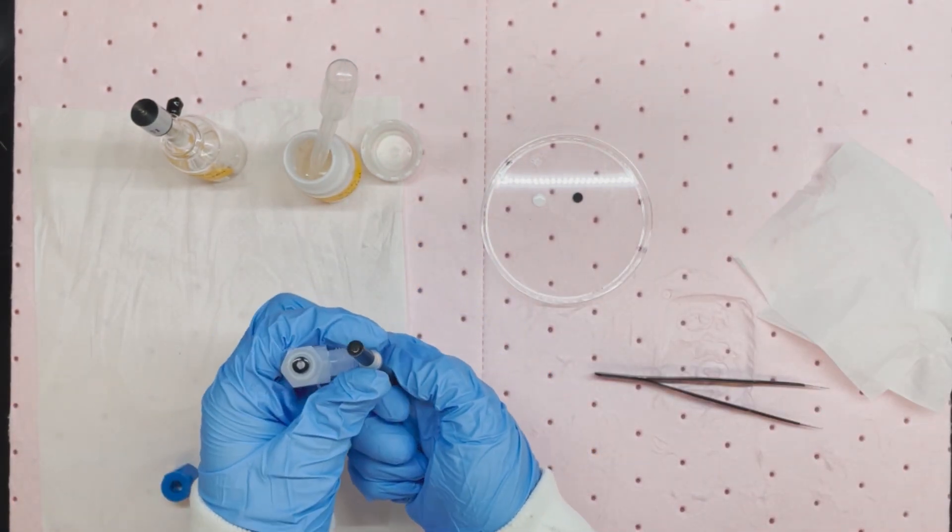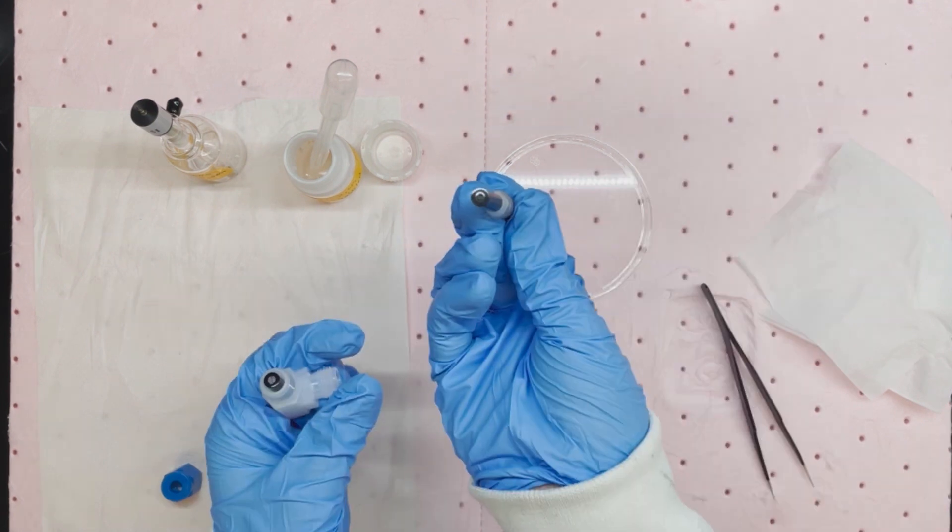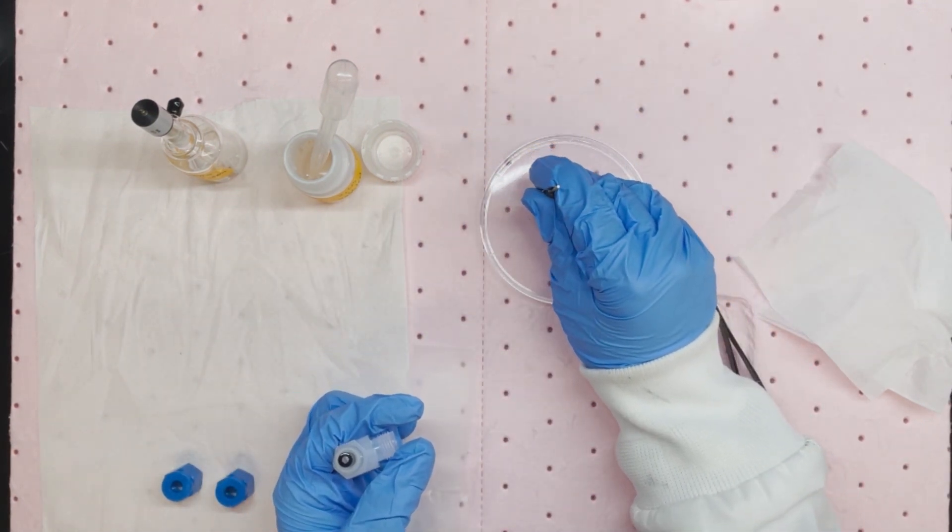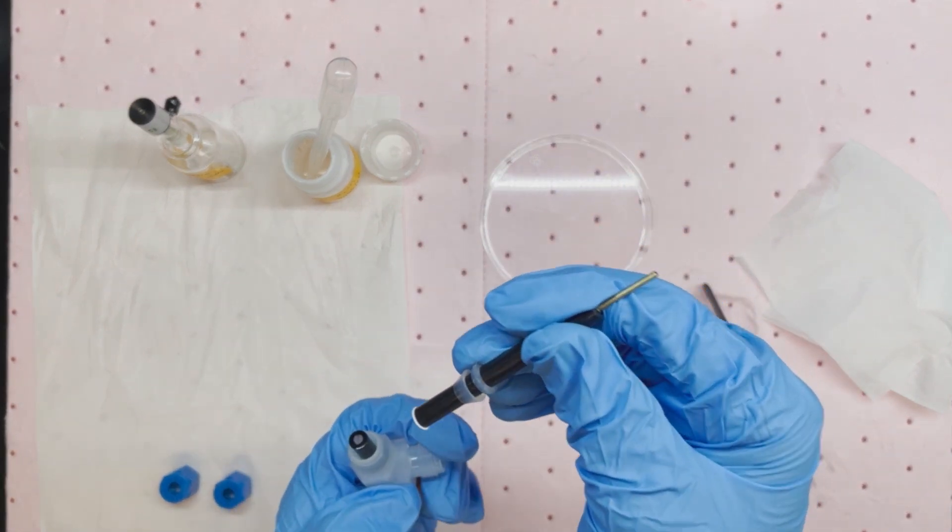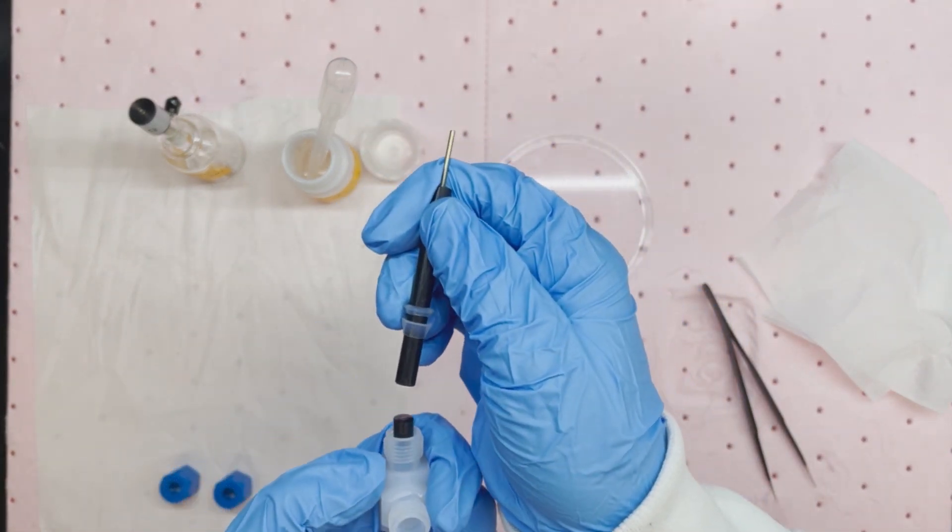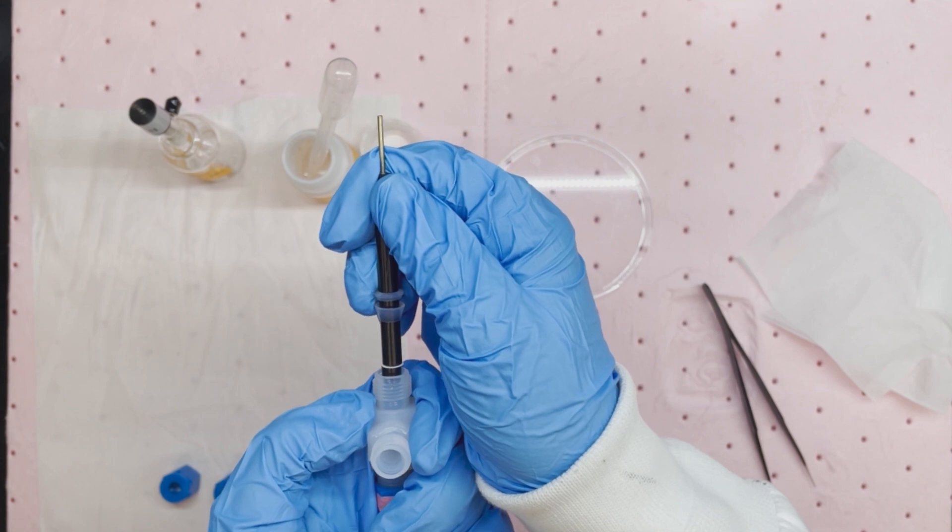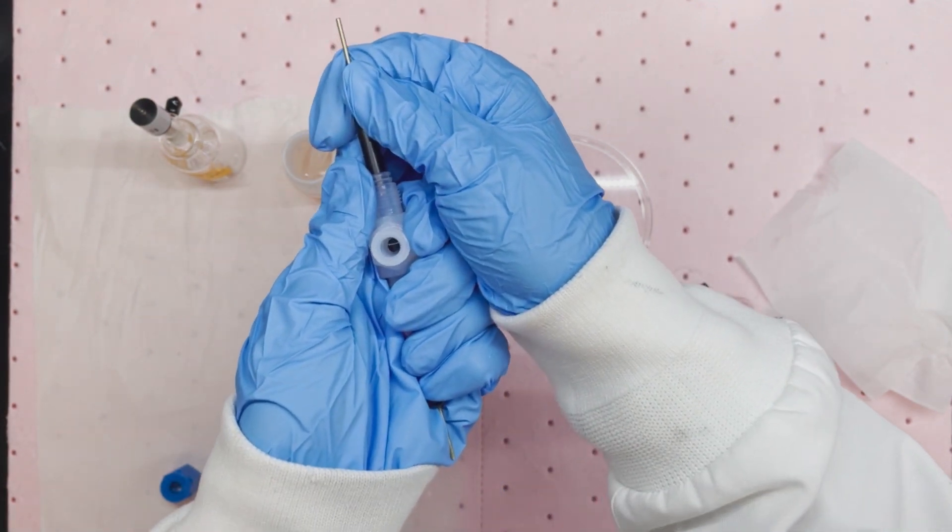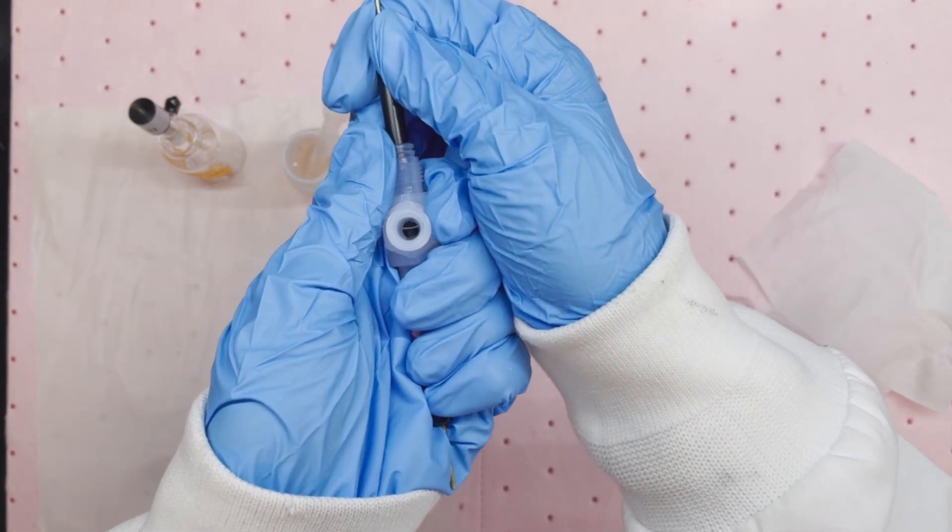To place the counter electrode and separators, we first assemble them and press the other glassy carbon electrode firmly against this assembly. They will stick. Make sure the two glassy carbon electrodes are aligned and press the counter electrode against the working electrode until they reach the center of the cell body.